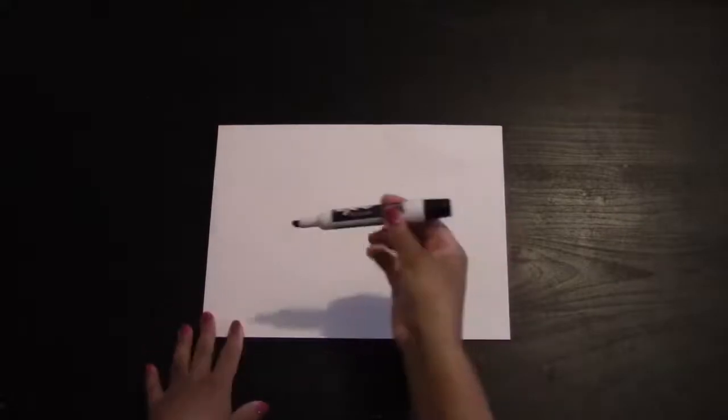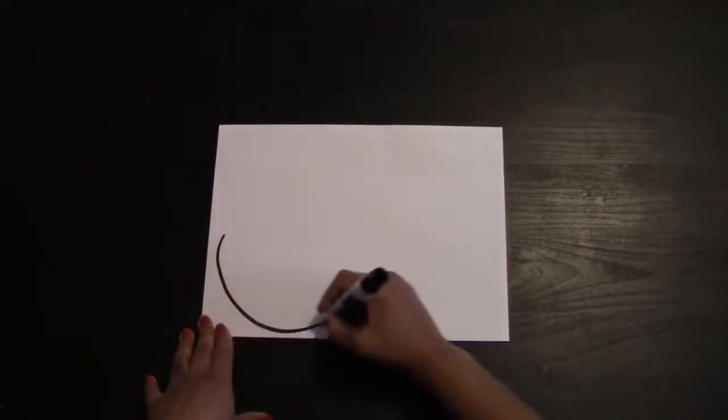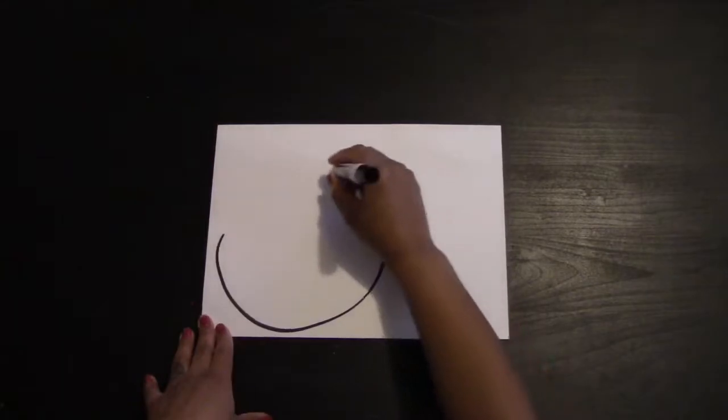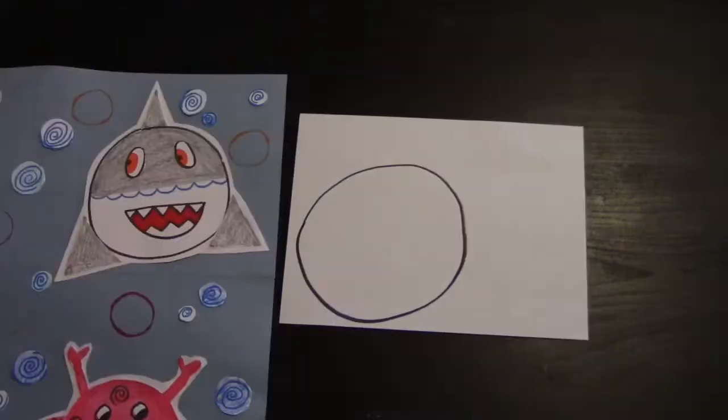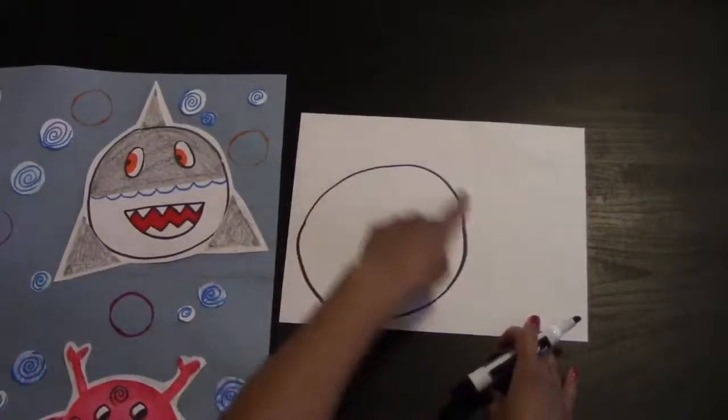Go ahead and take your white sheet of paper and grab a black marker and we're going to draw a circle. Try to draw it in the corner of the paper so that you have room for the rest of the shark's parts. Let's use our shark that we already made as a reference. First we have a circle.